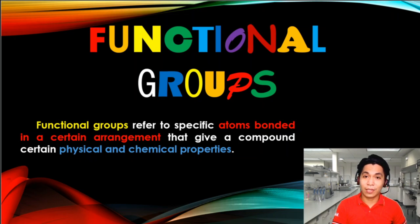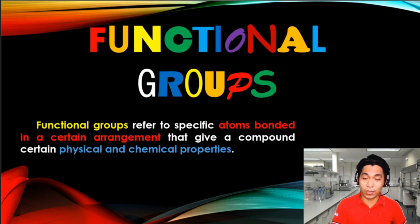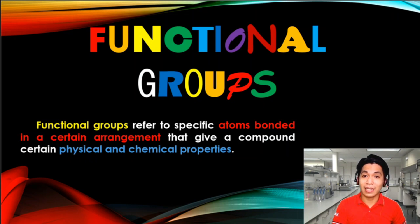Organic compounds have different properties and natures. The reason why they have these properties is because of what we call functional groups. A functional group is defined as a group of atoms arranged in a specific order that gives the molecule its distinct properties and natures.